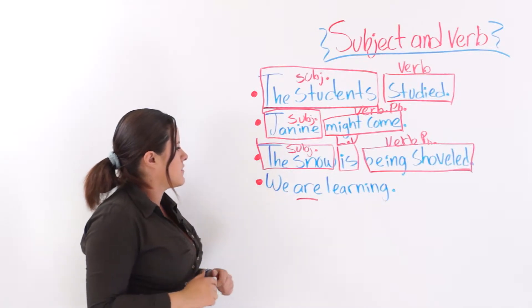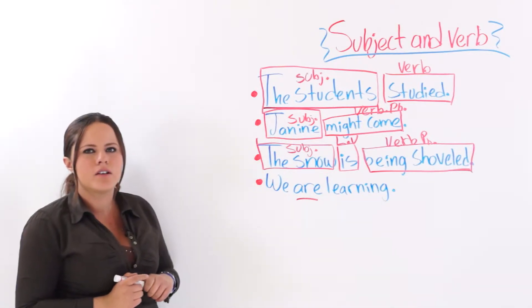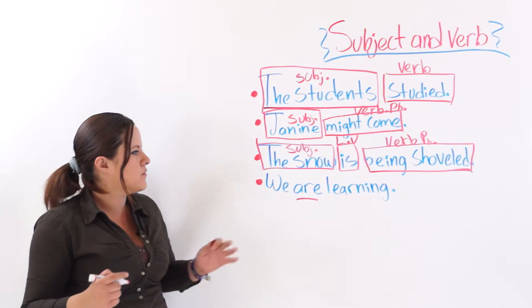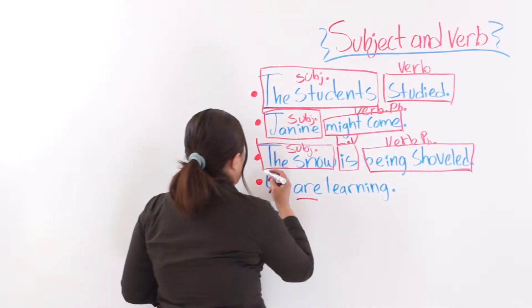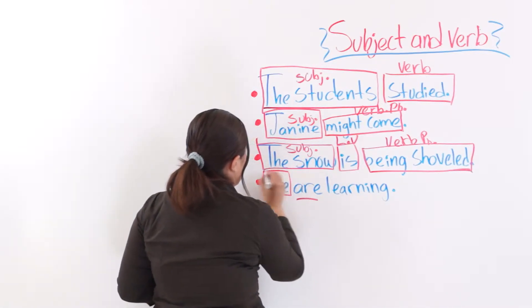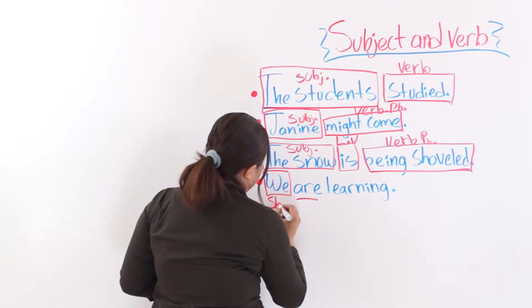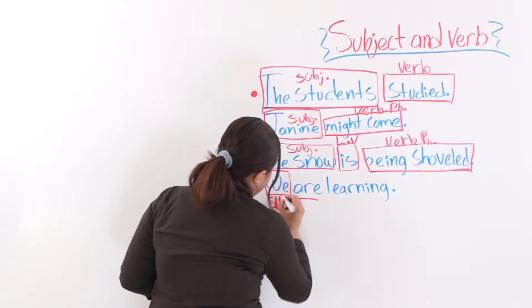And the last one says, we are learning. Learning. We have two verbs in this sentence. We, subject, subject.